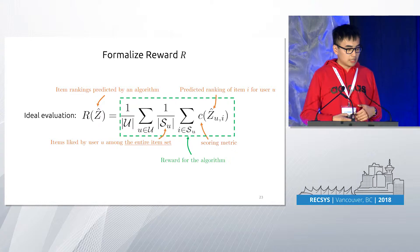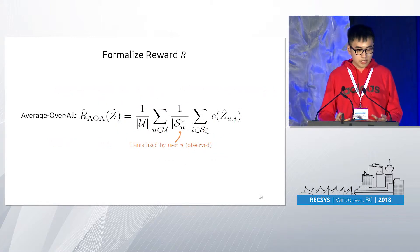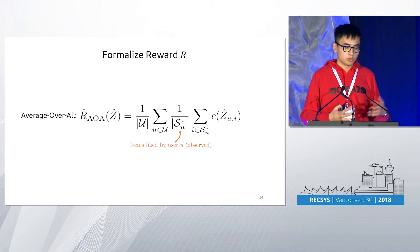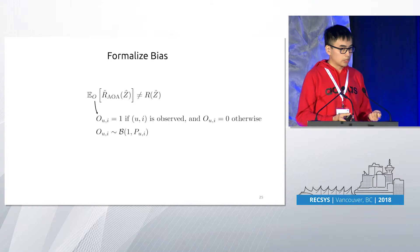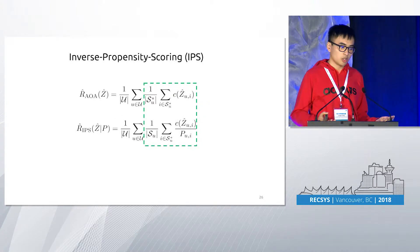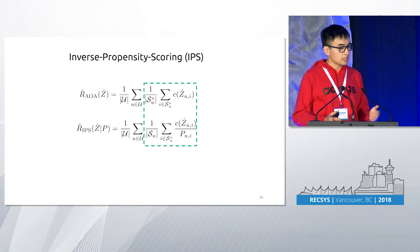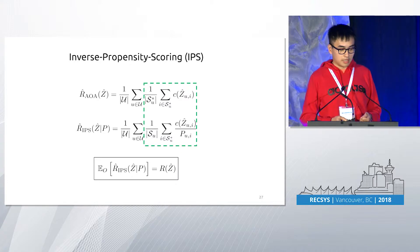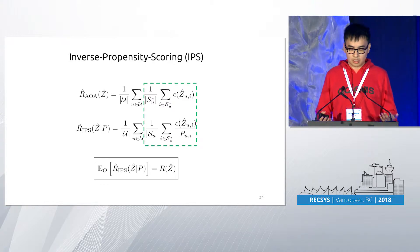What average overall does is use the observed set of items liked by user SU-star to substitute SU. We showed that the expectation value of this average overall evaluator is not equal to the true recommendation performance. Here, we modeled the observation of each positive user-item pair using a Bernoulli distribution with probability PUR of being observed. To adjust this bias, we leveraged the inverse propensity scoring (IPS) technique from causal inference and counterfactual reasoning. The basic idea is to divide the score for a user-item pair by the propensity — the probability that it is being observed — and replace SU-star with the unbiased SU. We proved that the expectation value of the IPS evaluator equals the true recommendation performance.